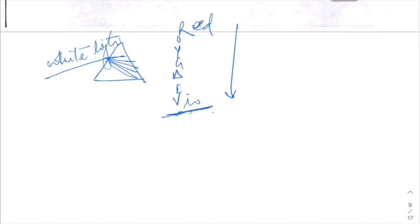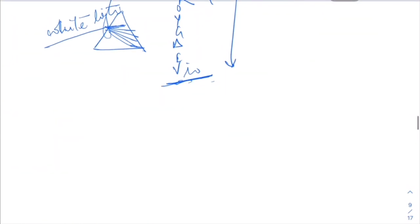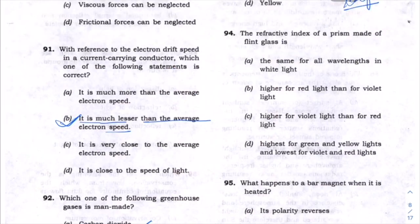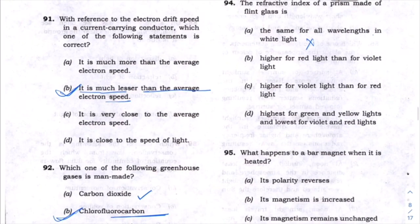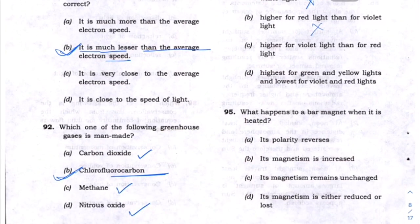When a light ray passes through a prism, the prism deflects different colors through different angles. This happens because different colors have different frequencies, and the prism acts differently for different frequencies — higher frequency means higher deflection. The deflection for red light is the least; deflection for violet light is the highest. So the refractive index is higher for violet light than for red light — option C is the answer.